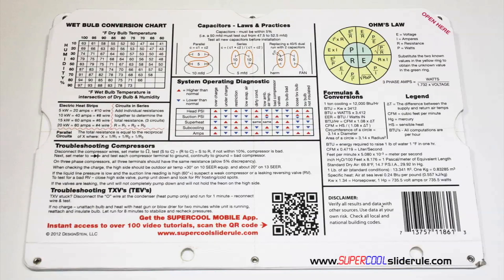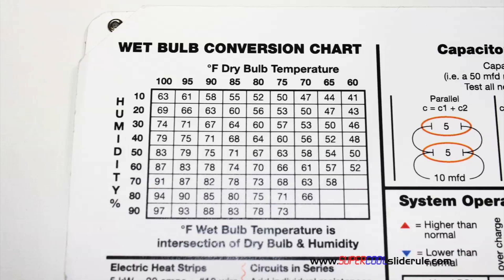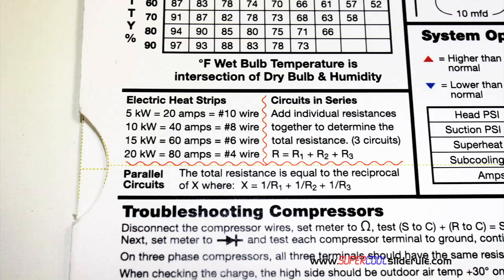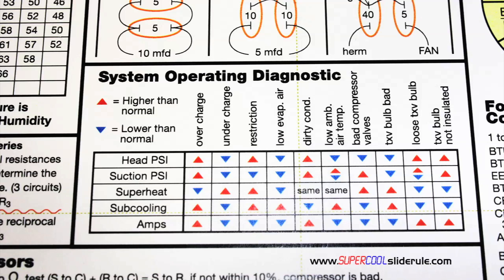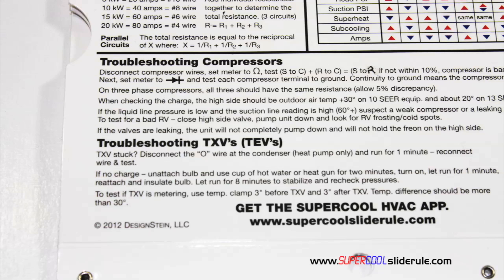The back cover contains required formulas. It has capacitor rules and practices, a wet bulb conversion chart, how to perform computations on series or parallel circuits, an electric heat strip guide, a complete system troubleshooting diagnostic chart, and how to troubleshoot compressors and TXV.